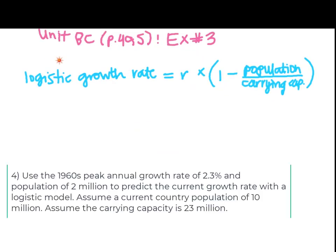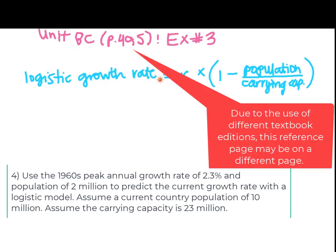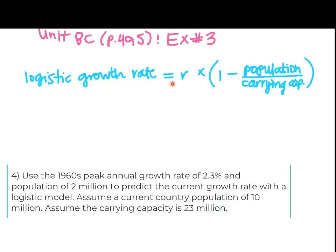For problem four, we use the 1960s peak annual growth rate of 2.3% and population of 2 million to predict the current growth rate using a logistic model. We assume a current country population of 10 million and a carrying capacity of 23 million. The formula for logistic growth rate is found on page 495, Unit 8C, similar to example three: logistic growth rate equals R times (1 minus population over carrying capacity).